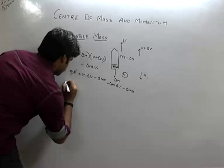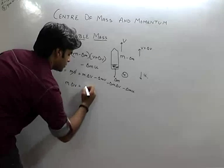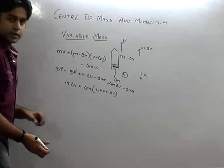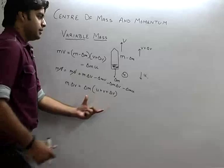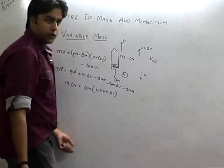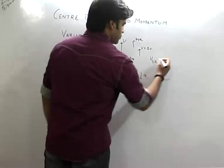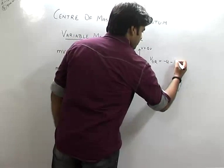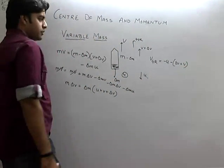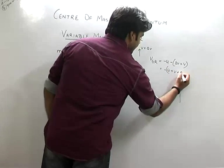So M·delta V equals delta M times (U plus V plus delta V). Now if we consider velocity of gases with respect to the rocket, taking positive upward: velocity of gases is minus U, minus of (V plus delta V), so this comes out to be minus of (U plus V plus delta V).